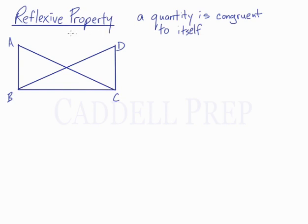When we do proofs, this is a property that's going to come up pretty often. What's useful about it is when we're given our information — our given information — we might find that we have a side and a side, an angle and an angle, but we don't have enough to prove the triangle is congruent. A lot of times we do have enough information, it's just that it's not written as given; instead it shows up in the diagram.